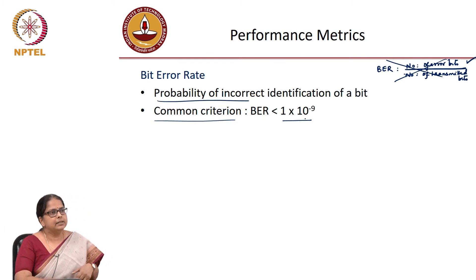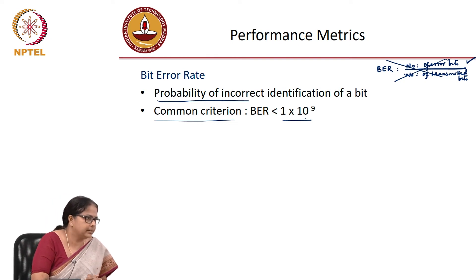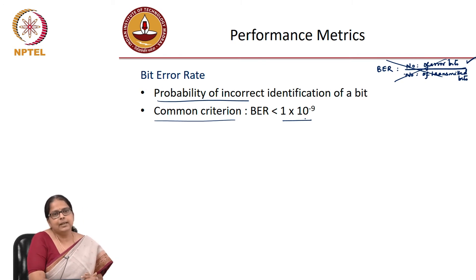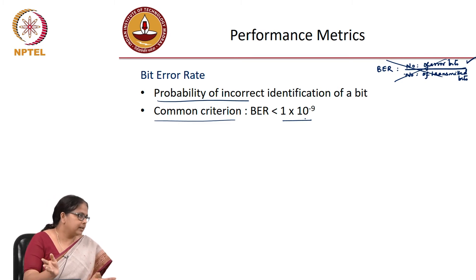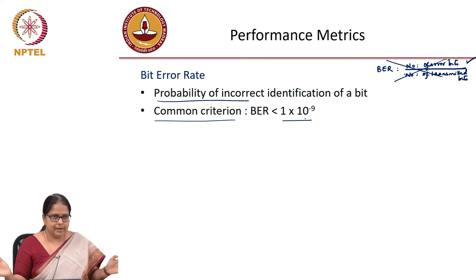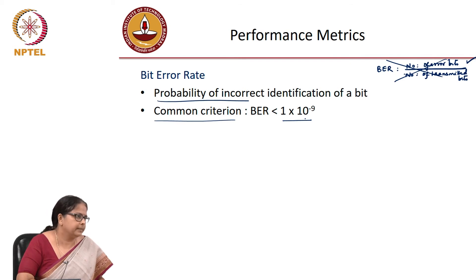The idea is to find the probability of receiving incorrect bits — that is bit error rate. We need to quantify this bit error rate. Optical communication systems are accepted to be satisfactory if the bit error rate measured at any given instant of time is less than 10 to the power minus 9. Only then you say it is an acceptable optical communication system.